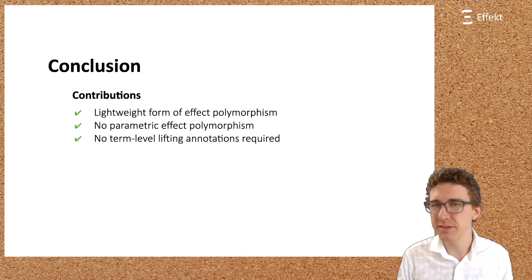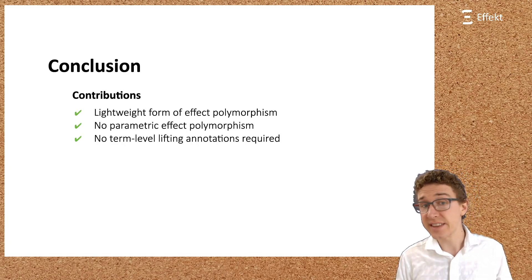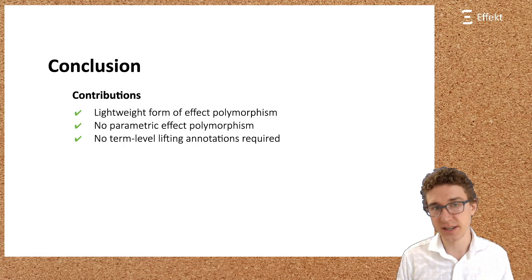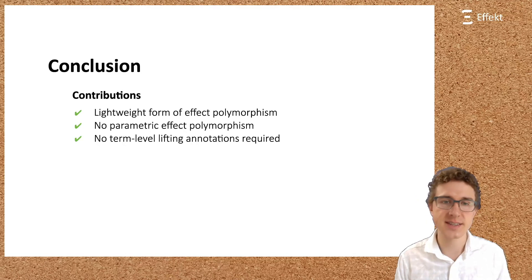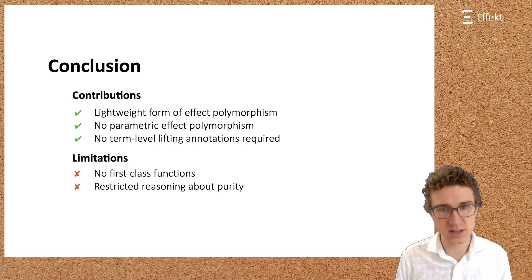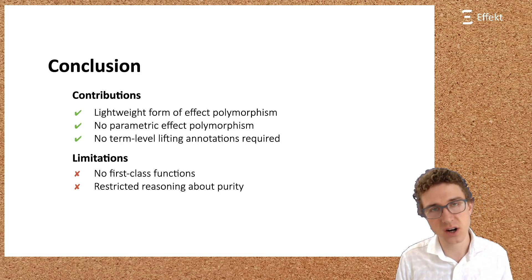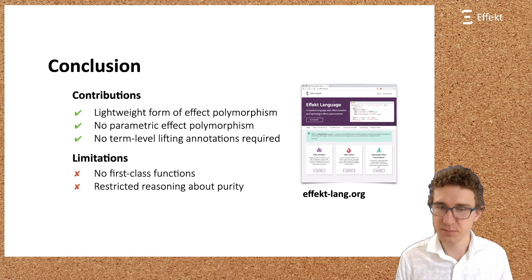I hope that I convinced you that effect offers an interesting lightweight form of effect polymorphism. Parametric effect polymorphism simply does not exist in the language. We also have seen that effect annotations influence the operational semantics. In particular, other than in languages like Frank, it is not necessary to adapt to computation using term-level lifts. This simplicity comes with some trade-offs. At the moment, we do not support first-class functions. Also, reasoning about purity is restricted. An empty effect set does not imply that a function is pure. It just implies that we, as the caller, cannot handle any effects. As already mentioned in the beginning of this talk, I invite you to visit our website and experiment with our language. Thank you.